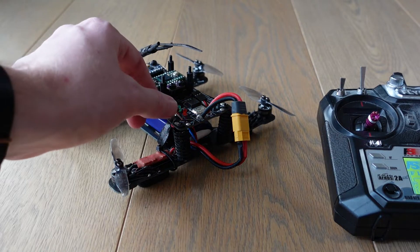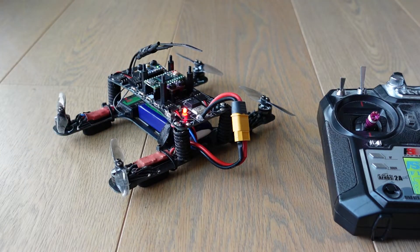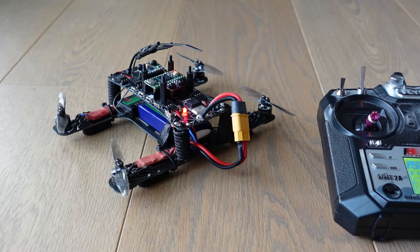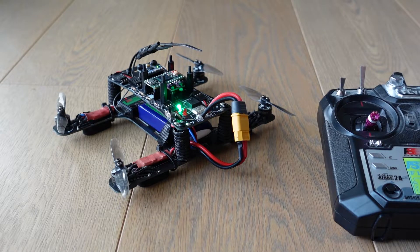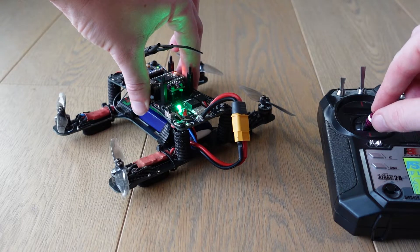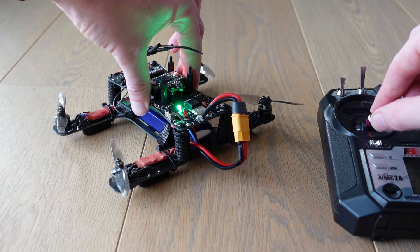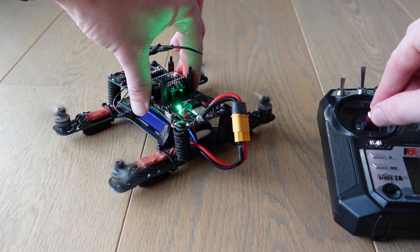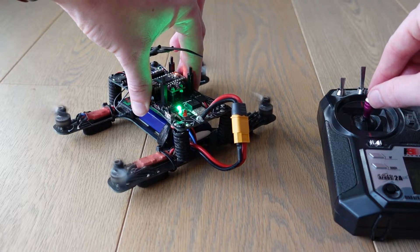As you already noticed, the quadcopter has a slide switch allowing you to turn it on. This slide switch is connected to a transistor able to switch off very high currents, as I demonstrate in this video with the motors at full throttle.